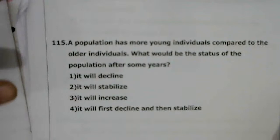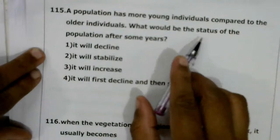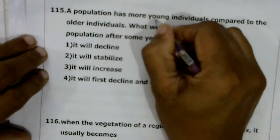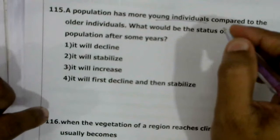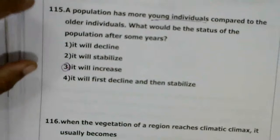Next question: a population has more young individuals compared to older individuals. What would be the status of the population after some years? Young individuals have greater reproductive capabilities, so as there are more young individuals, the population will increase after some years.